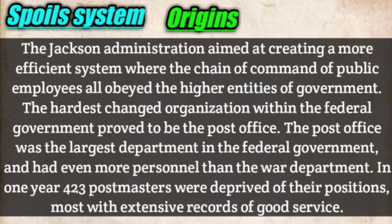At the beginning of Jackson's administration, fully 919 officials were removed from government positions, amounting to nearly 10 percent of all government postings. The Jackson administration aimed at creating a more efficient system where the chain of command of public employees all obeyed the higher entities of government. The hardest hit organization within the federal government proved to be the post office, which was the largest department and had even more personnel than the war department. In one year, 423 postmasters were deprived of their positions, most with extensive records of good service.